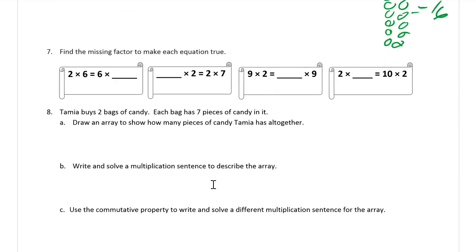Number seven: find the missing factor to make each equation true. We're using the commutative property to solve these. Two times six equals six times two. Something times two — the seven is missing here, so the answer is seven. Nine times two — here's the nine, we need the two. And ten times two on this side of the equal sign means the other side needs two times ten, so the missing factor is ten.